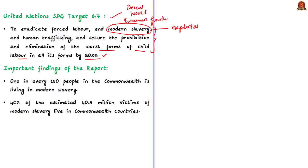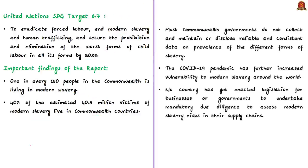Modern slavery refers to situations of exploitation wherein a person cannot refuse or leave because of threats, violence, coercion, deception, or abuse of power. Key findings: one in every 150 persons in the Commonwealth is living in modern slavery; 40% of around 4 crore victims of modern slavery worldwide live in Commonwealth countries. Most Commonwealth governments do not have reliable and consistent data on prevalence of different forms of slavery. COVID-19 has further increased vulnerability to modern slavery. No country in the Commonwealth has yet enacted legislation requiring businesses or governments to carry out due diligence on modern slavery risks in supply chains.